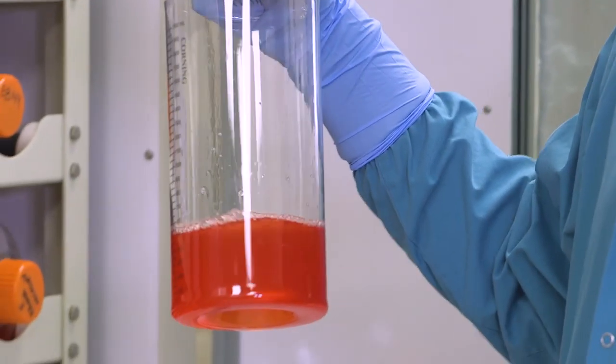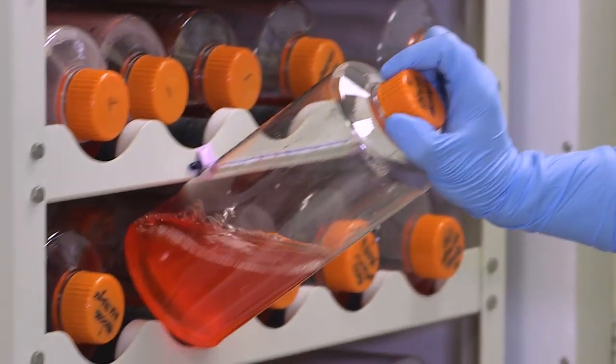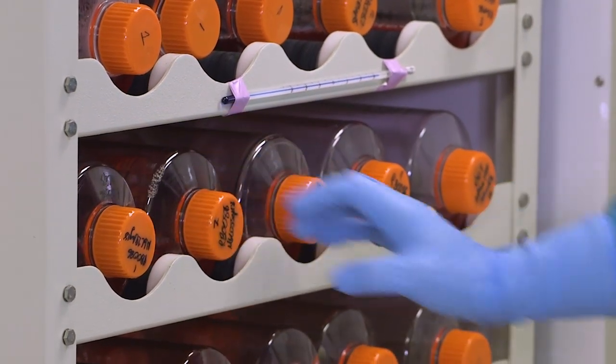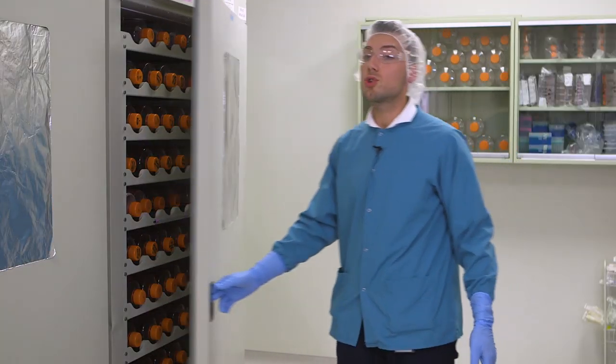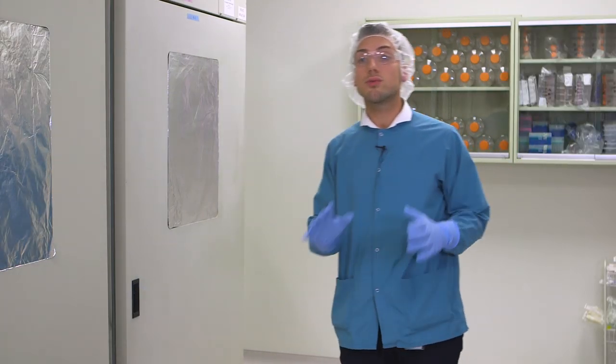The roller bottle process typically takes around six to eight weeks from initial cell line thaw all the way through culture supernatant harvest into concentration.